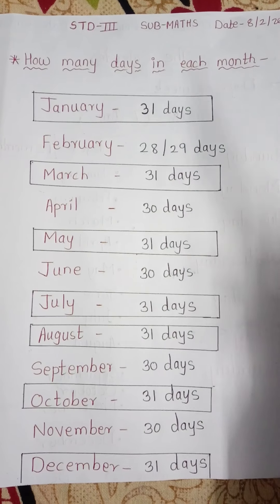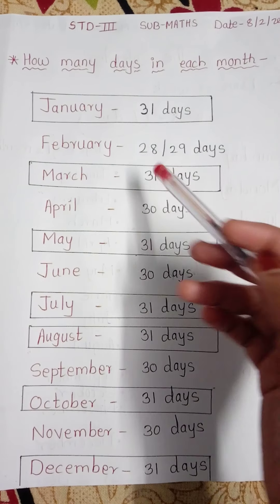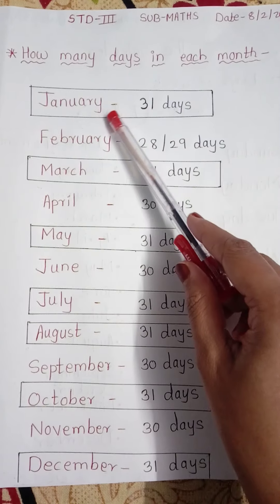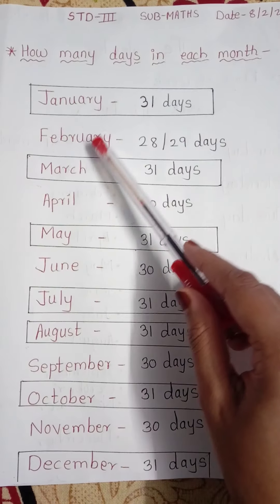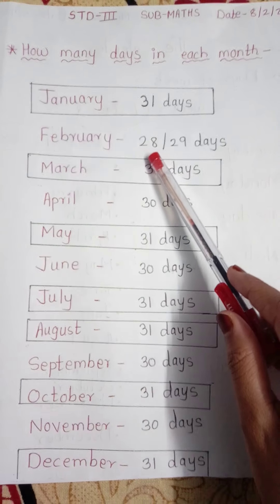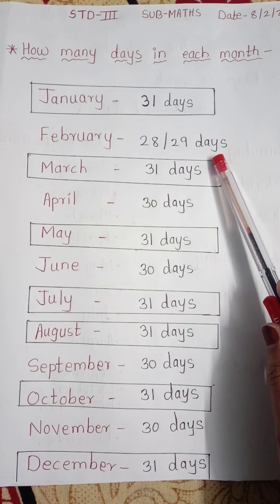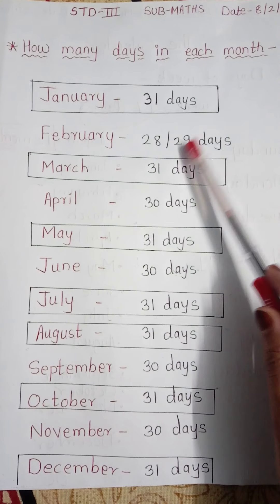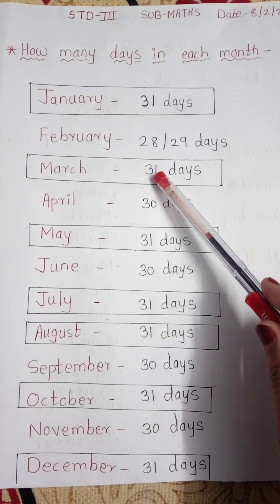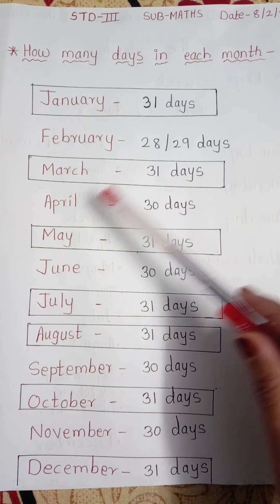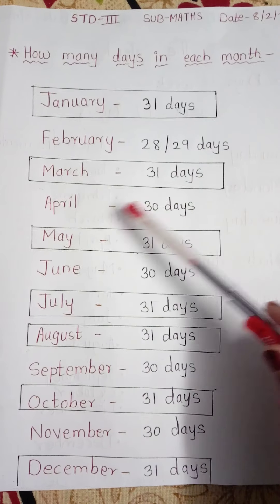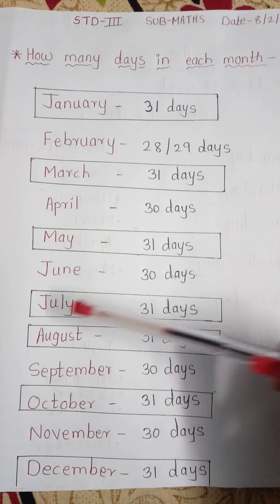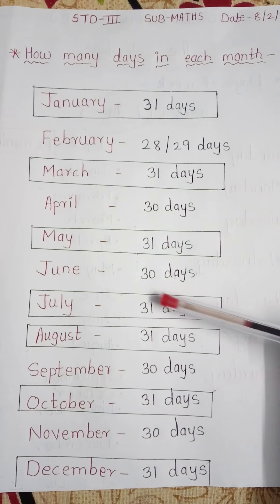In January, how many days? 31 days. Then in February, 28 or otherwise 29 days. February may have 28 days. Then in March, 31 days. Then in April, 30 days. In May, 31 days. June, 30 days. July, 31 days.